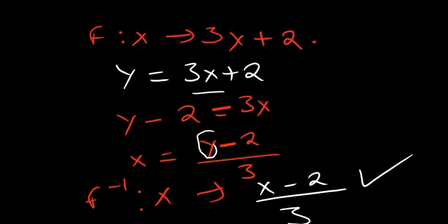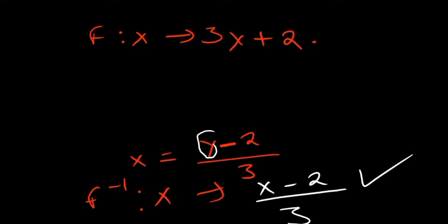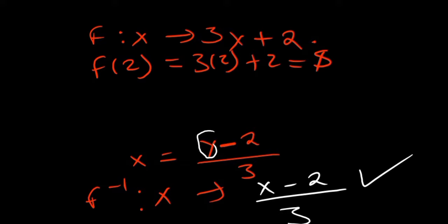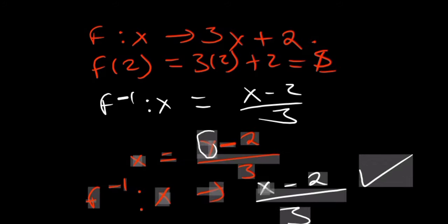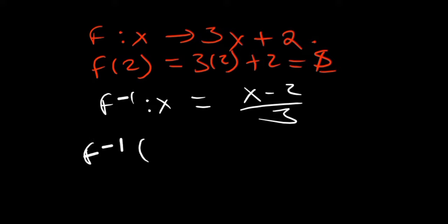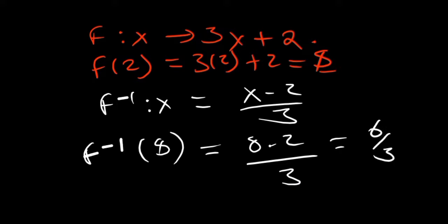Let's verify: f(2) = 3(2) + 2 = 8. Plugging 8 into the inverse: (8-2)/3 = 6/3 = 2. It gives us back our original input of 2. That confirms the inverse function correctly reverses the output.